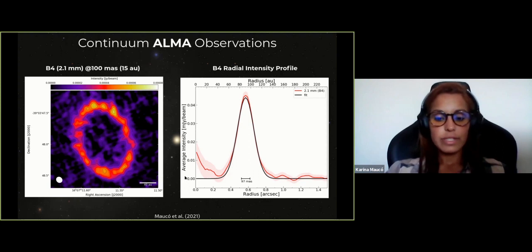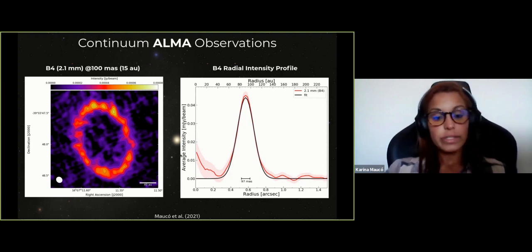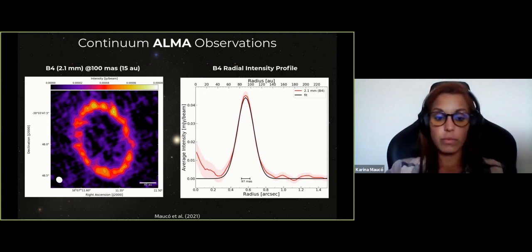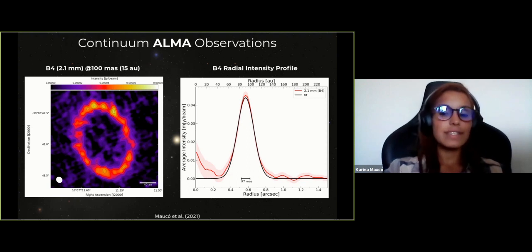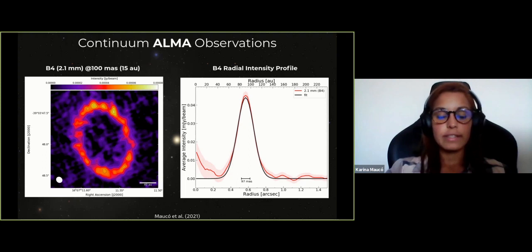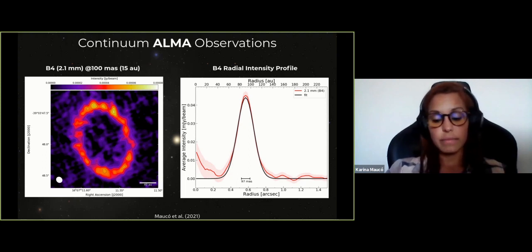We found something very interesting: an excess of emission inside 40 AU. We wanted to use these new observations together with archival observations to estimate the spectral index and characterize the dust content in the system.